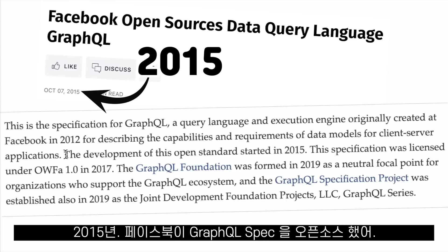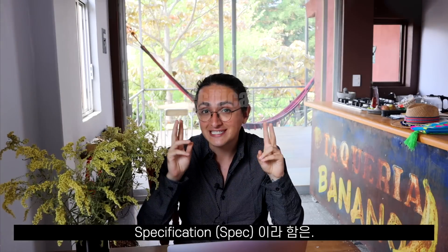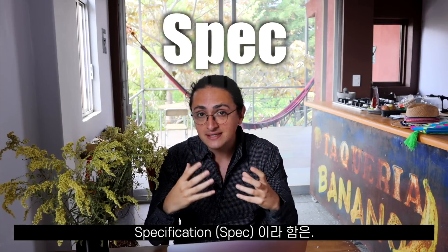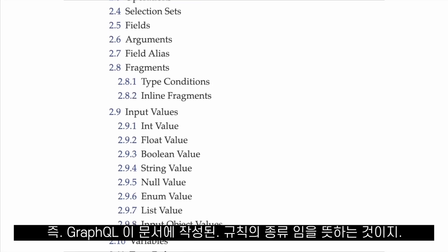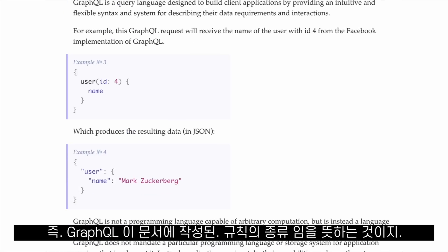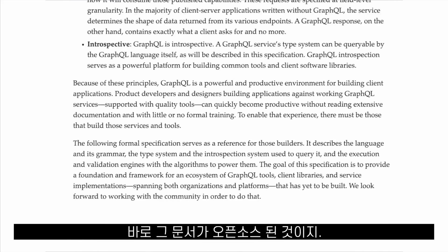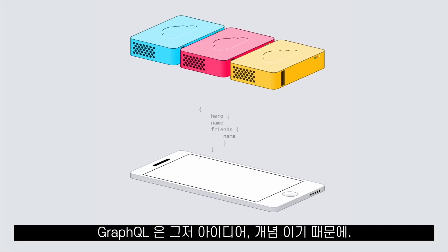Now in 2015, Facebook open sourced the GraphQL specification. Specification, or spec, means that GraphQL is just a set of rules and ideas written on a paper. That is the paper that was open sourced.